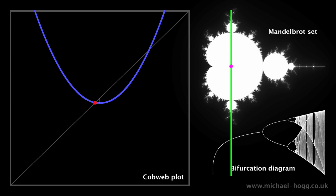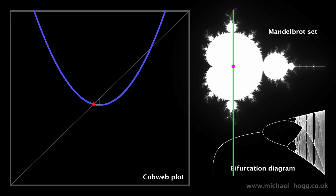As the pink dot slowly moves to the right, along the horizontal axis of the Mandelbrot set, the blue curve slowly moves downwards.